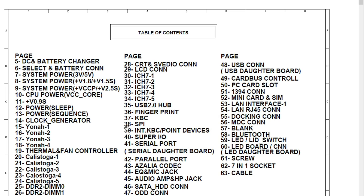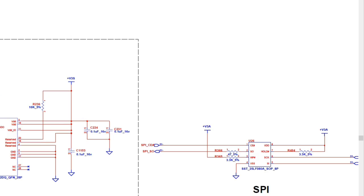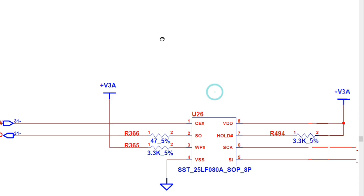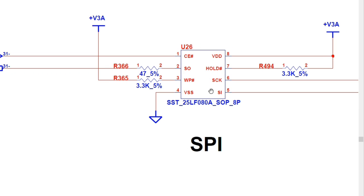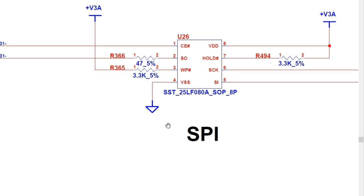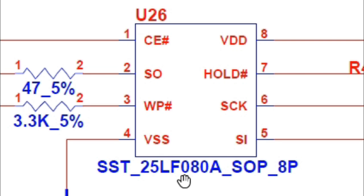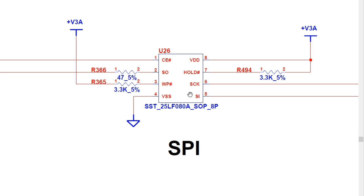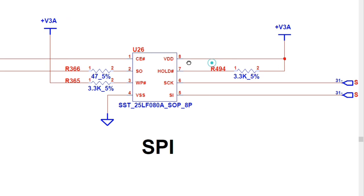The BIOS is on page 38 of the schematic. Zooming in, we can see the same pin configuration. There's the output signal, write protect, and VSS always connected to ground. This particular chip is an SST 25LF088 — a different type of BIOS, but the working principle is the same. Pin four is connected to ground, pin five has data input, pin six is clock, pin seven is hold, and pin eight (VDD) shows 3 volts.